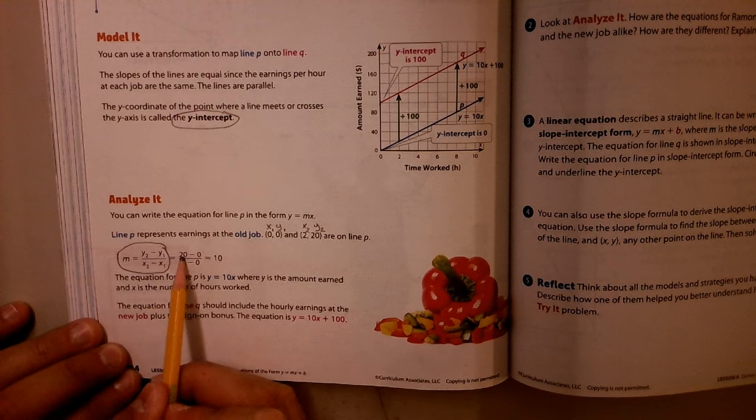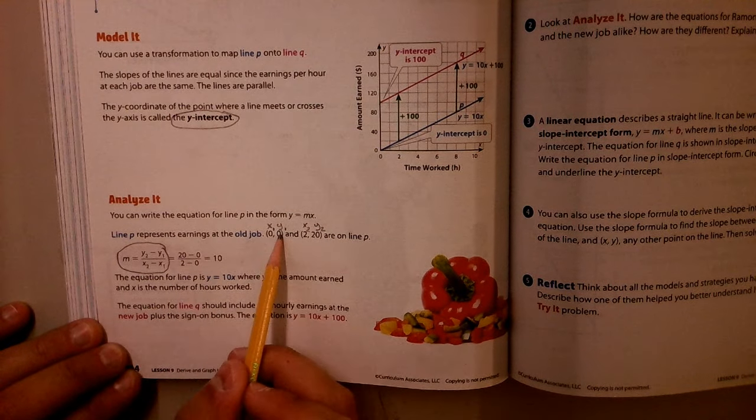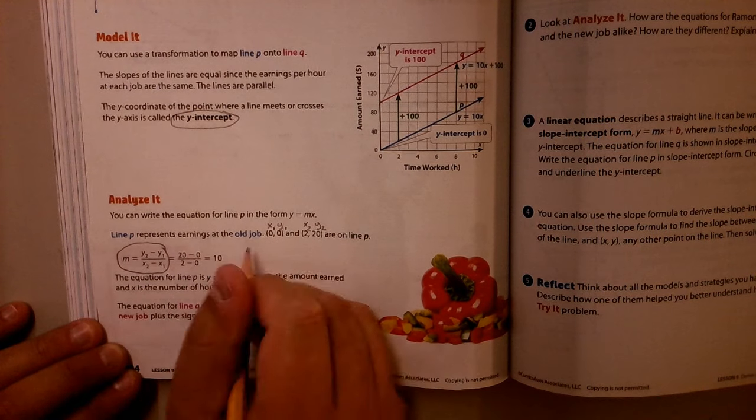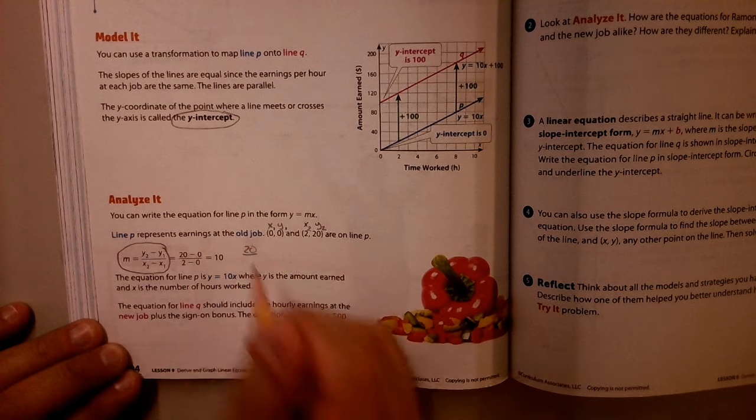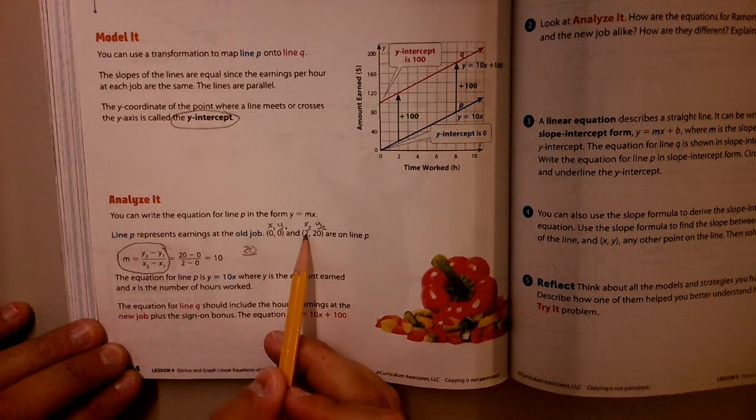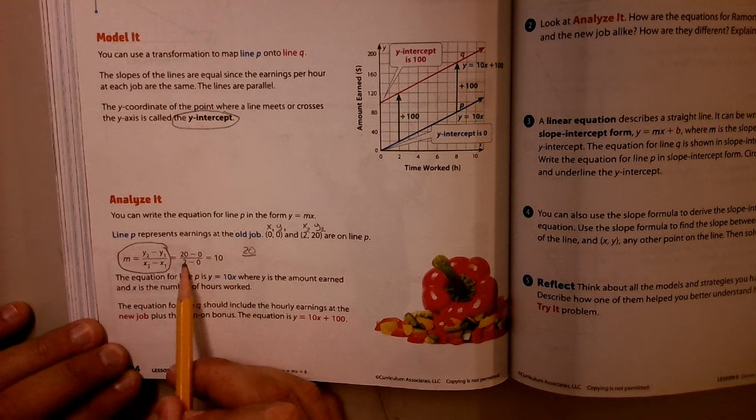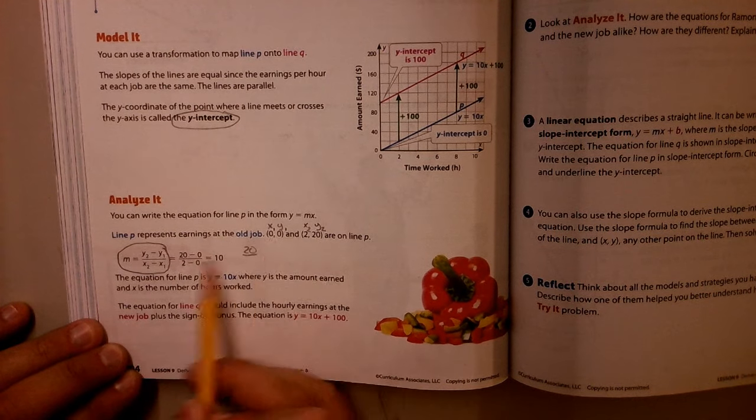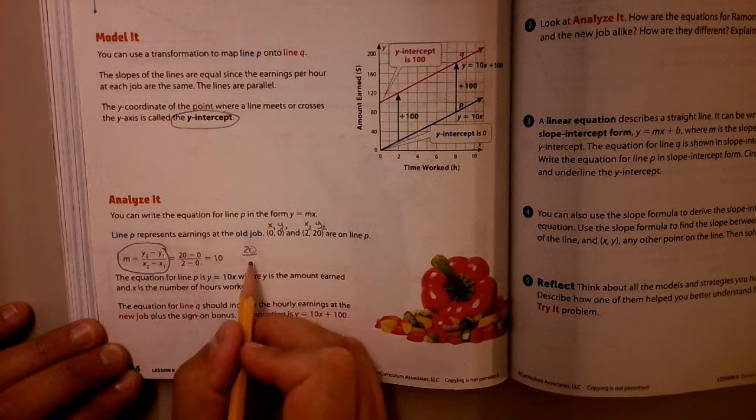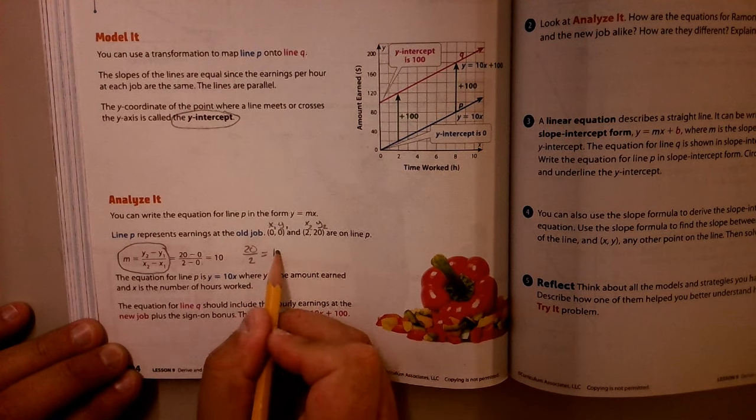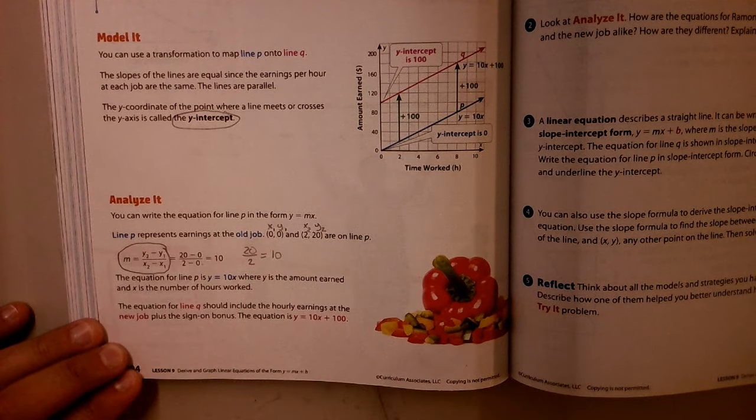And then we can just plug those in. So we would put 20 right there minus the Y1, which is 0. So 20 minus 0 is 20 over, and then we would take our X sub 2, which is there, put it here, and 2 minus our X sub 1, which is 0. 2 minus 0 is 2. So we would get 20 over 2, which is 10.